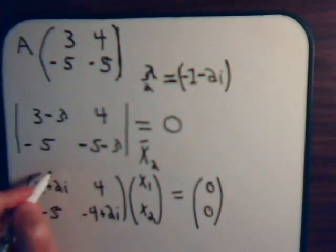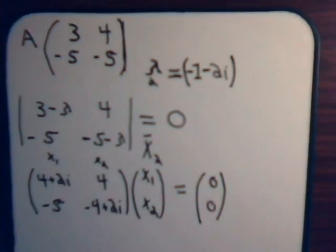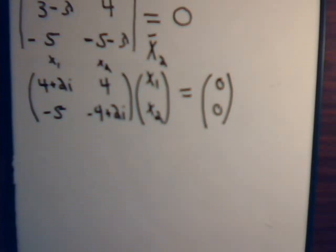And this times the components of our corresponding eigenvector equals 0. Of course, this is the x1 column. This is the x2 column. And we'll go ahead. It's a pretty simple setup. But let's go ahead with the full procedure.